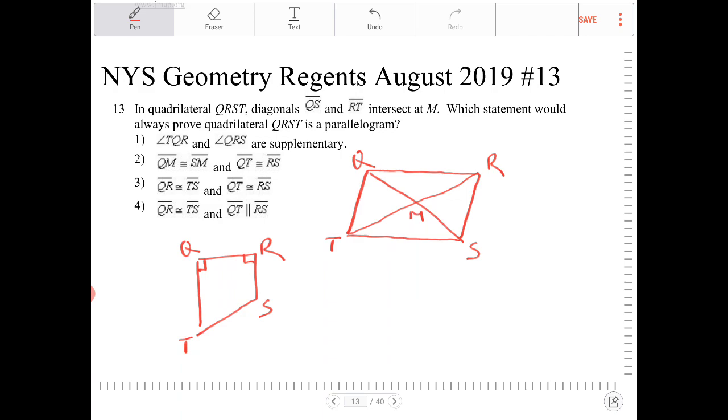QM is congruent to SM and QT is congruent to RS. So these two are congruent and these two are congruent. Is that going to be enough to prove that it's a parallelogram? That is not going to be enough because what has to be true is the two triangles, TQM and RSM, those two triangles should end up being congruent inside of the parallelogram, which is what option two is trying to go for, but that's not really the case here. So we can't have that, so that doesn't work.